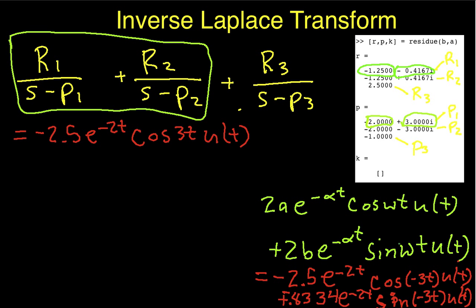And then I'm going to have minus 0.8334 e to the minus 2t sine of minus 3t. That minus sign is going to cancel this guy out. So, I'm going to have plus 0.8334 e to the minus 2t sine of 3t u of t.